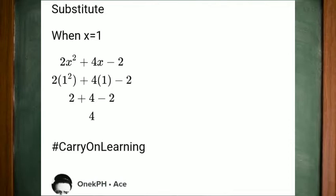When x is equal to 1, 2x squared plus 4x minus 2 becomes 2 times 1 squared plus 4 times 1 minus 2.